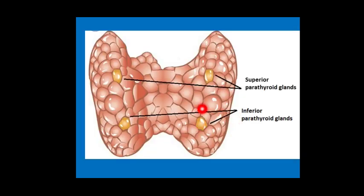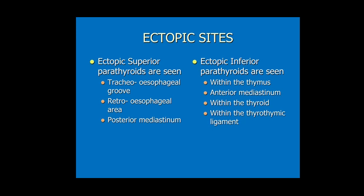A diagram shows the 4 parathyroid glands on the posterior aspect of the thyroid gland. Many other sites exist where these glands can be found due to their descent during embryology — they can be seen at any site along their path of descent. Ectopic superior parathyroids have been seen in the tracheoesophageal groove, retroesophageal area, and posterior mediastinum. Ectopic inferior parathyroids are commonly found within the thymus, anterior mediastinum, within the thyroid, and within the thyrothymic ligament.